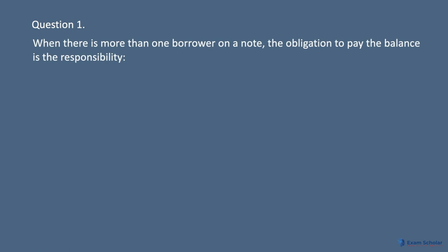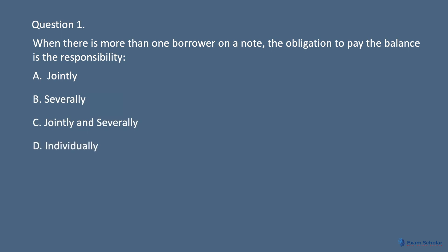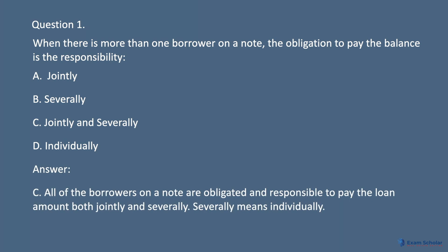Question 1. When there is more than one borrower on a note, the obligation to pay the balance is the responsibility of: A. Jointly. B. Severally. C. Jointly and severally. D. Individually. Answer: C. All of the borrowers on a note are obligated and responsible to pay the loan amount both jointly and severally. Severally means individually.